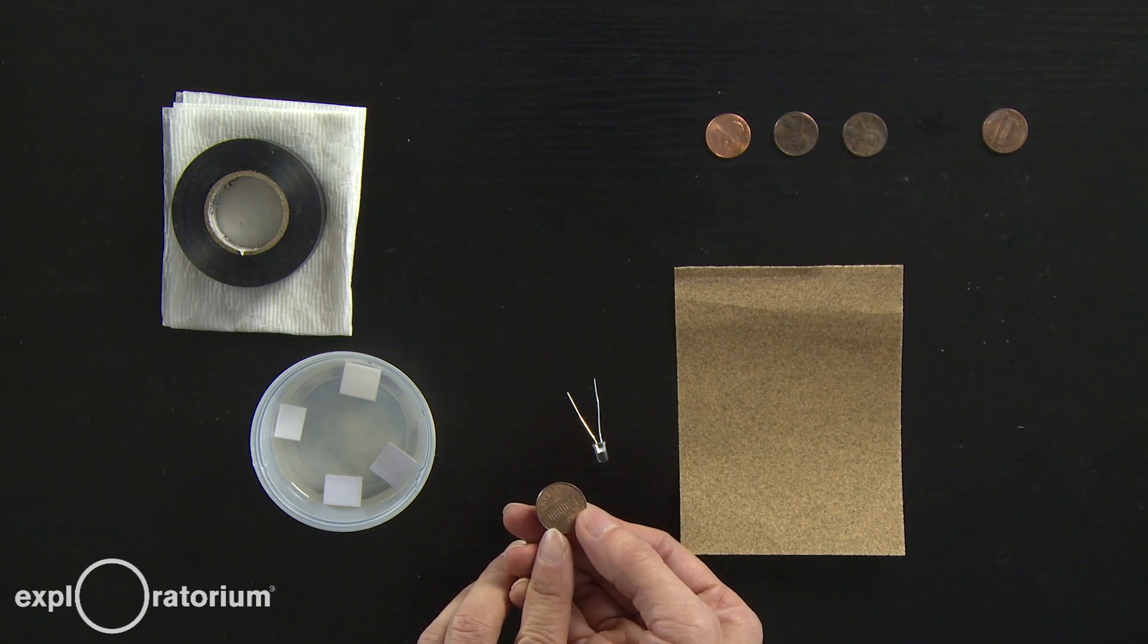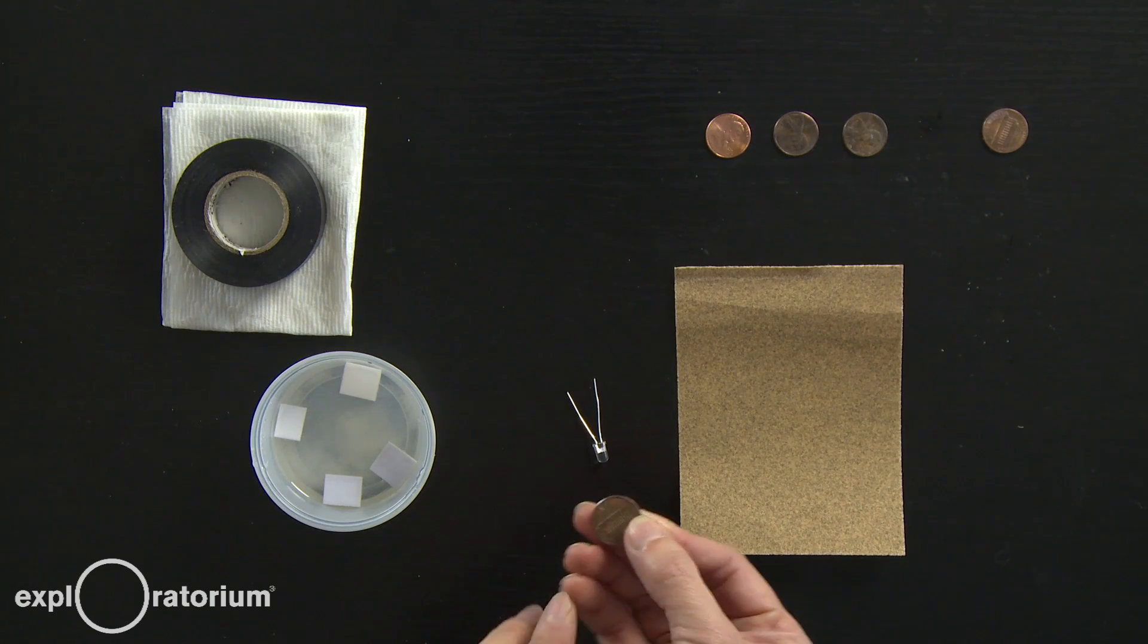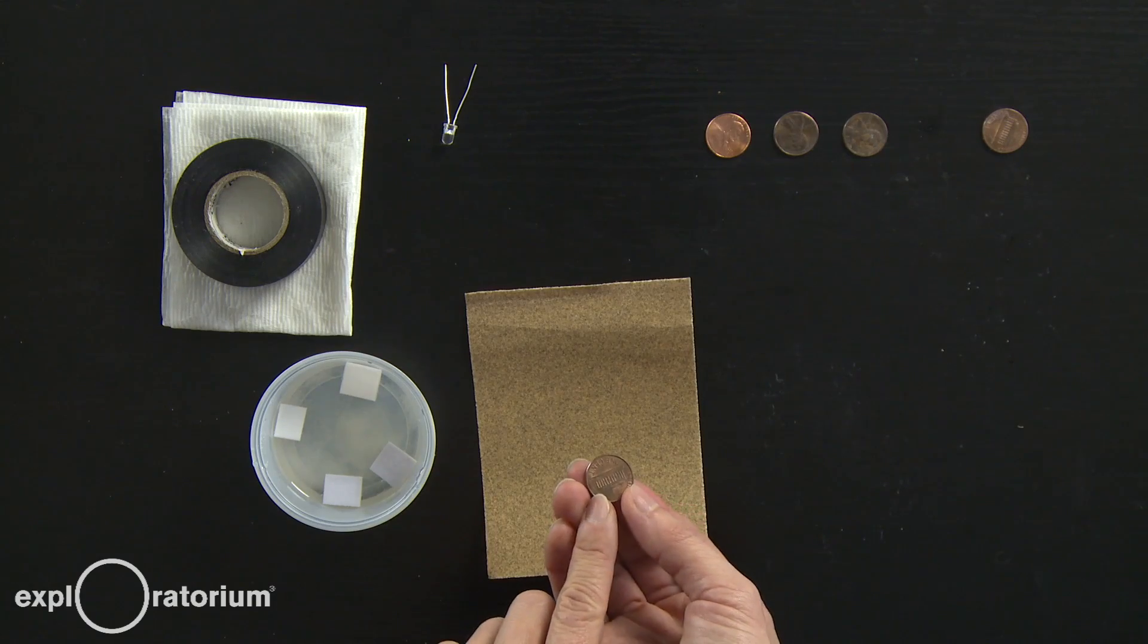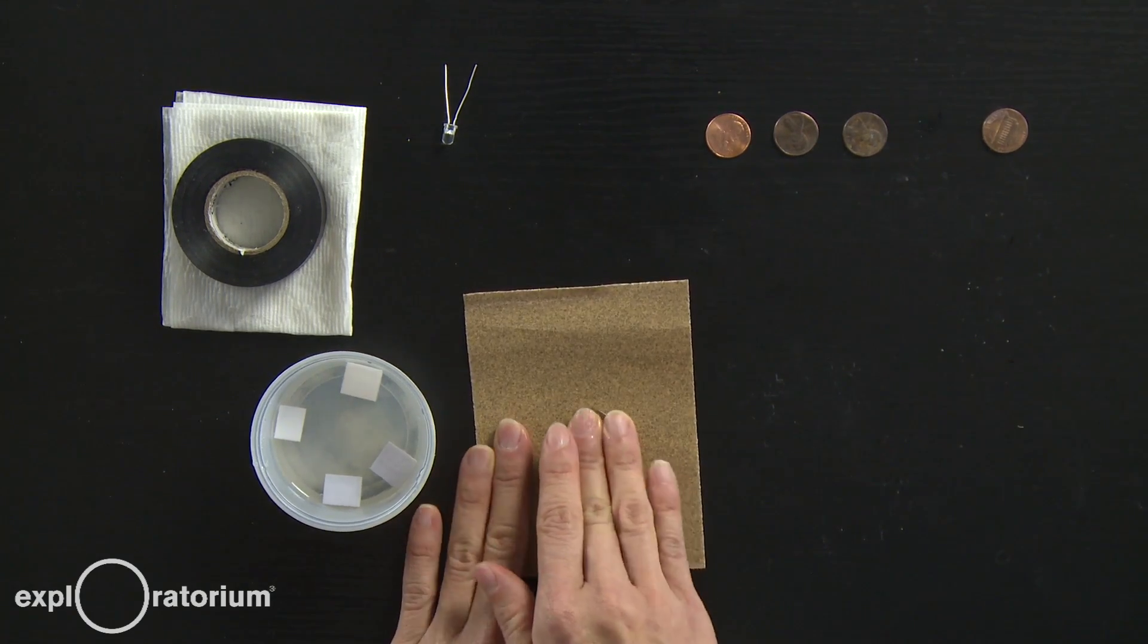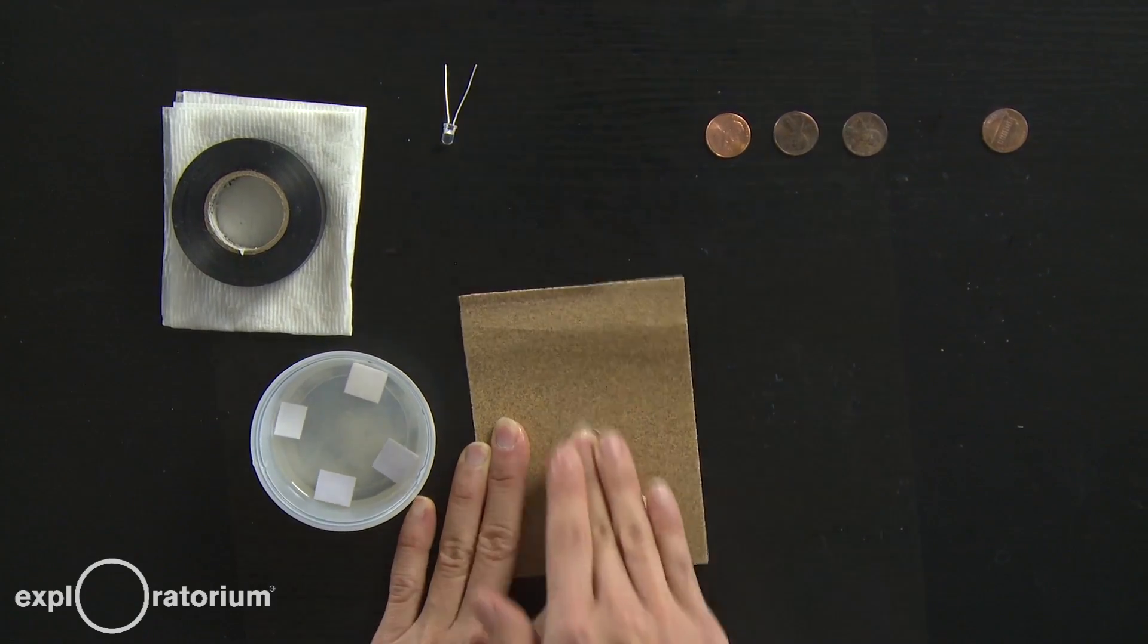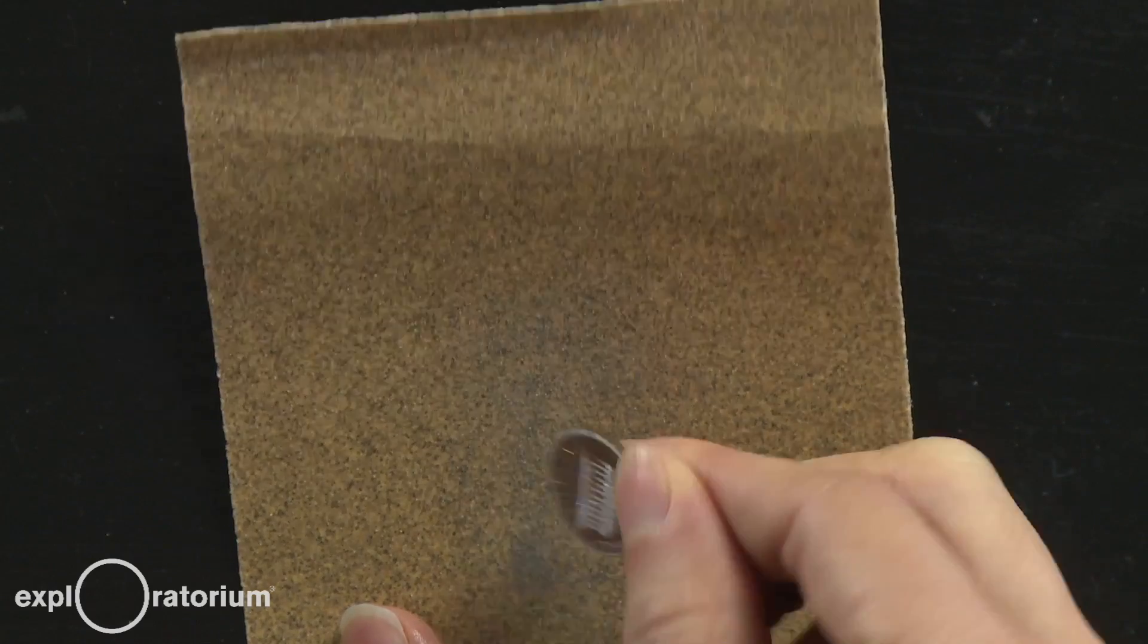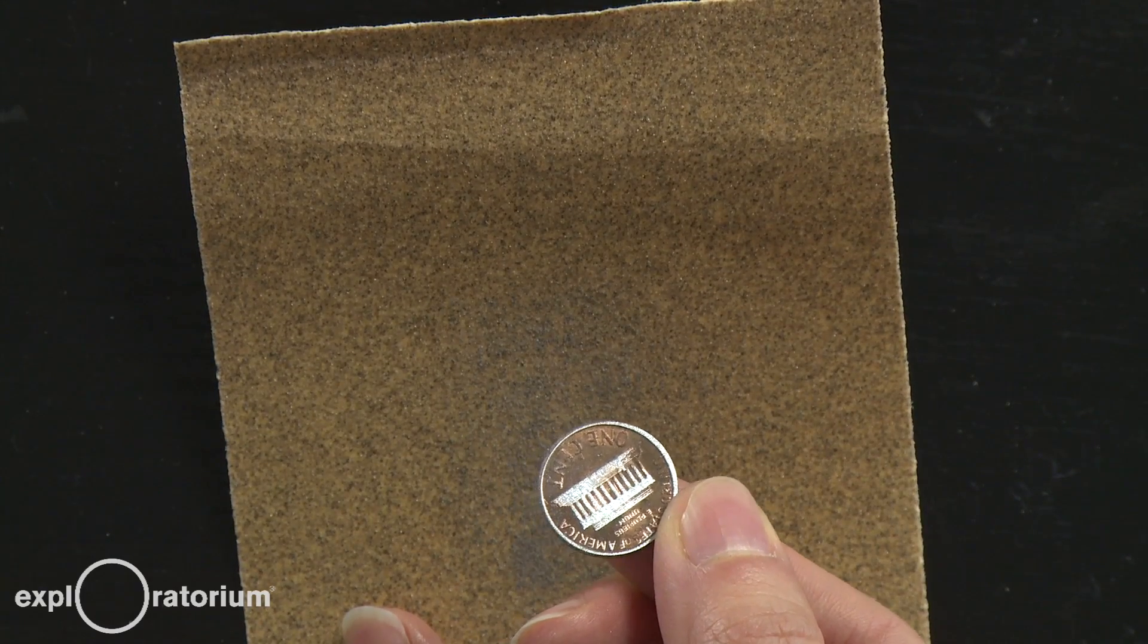A little tip is that the Lincoln Memorial side, the tail side of the penny, is easier to sand off. So I like to take my sandpaper, put my penny with the Lincoln Memorial side down, and then just sand off as much as I can. After a little bit of sanding, you'll see that the zinc side of the penny is starting to show through.